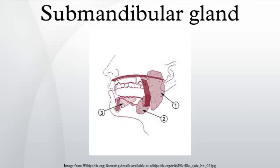The paired submandibular glands are major salivary glands located beneath the floor of the mouth. They weigh about 15 grams and produce around 60 to 67% of the total volume of saliva.